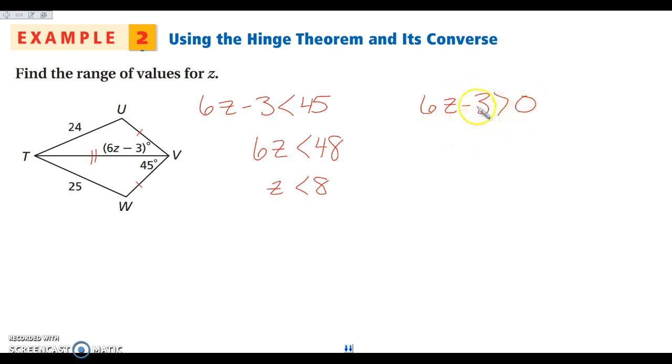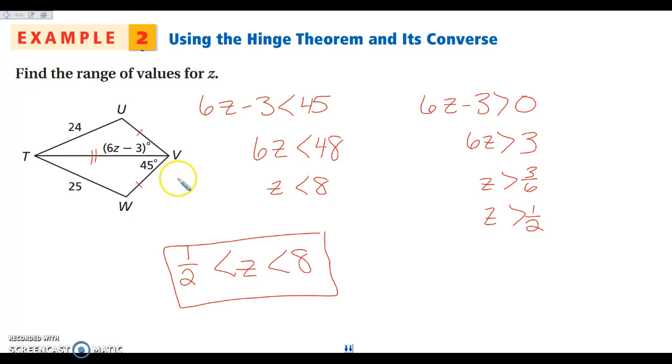Then over here, we're going to add 3 to both sides and I'm going to get that 6z is greater than 3. Divide both sides by 6, I get 3 over 6, which we need to reduce to being one half. So when I write my range, remember start with the smallest value and then end with the largest one. So z is going to be between one half and 8 in order to be greater than zero but still smaller than 45 degrees. And again, if you have questions on that, go ahead and write them down now.